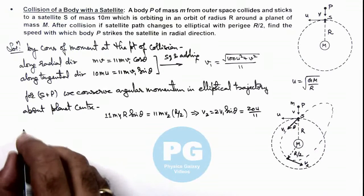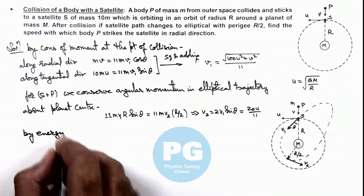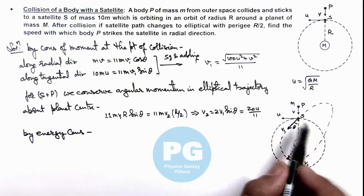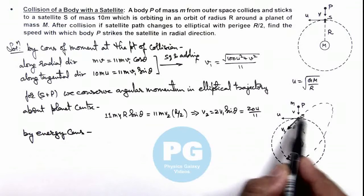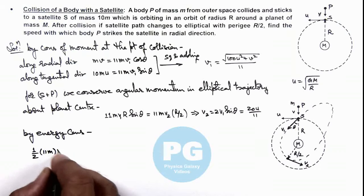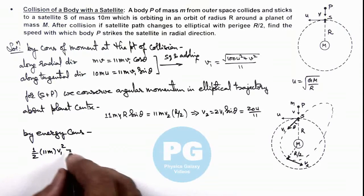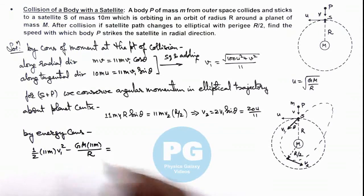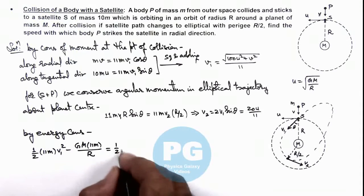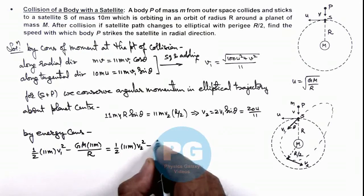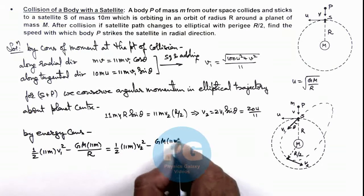Now if we conserve energy, we can write by energy conservation. Here we can write the kinetic energy just after collision, because you must be careful that at the point of collision when P sticks to S, some energy will be dissipated. But after collision the kinetic energy of this combined system is half 11m multiplied by v1 squared, and its potential energy is minus G M 11m by R. This must be equal to at the perihelion point: half 11m multiplied by v2 squared minus G M 11m upon R by 2.